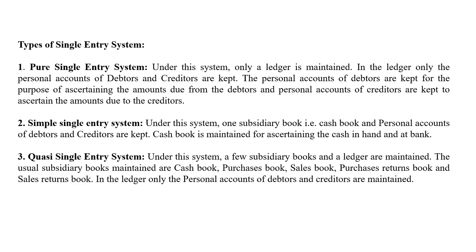Second, the simple single entry system. Under this method, one subsidiary book — that is the cash book — and personal accounts of debtors and creditors are kept. Along with the personal accounts of debtors and creditors, a cash book is prepared. The cash book is maintained for ascertaining cash in and cash out.